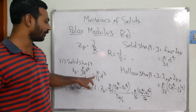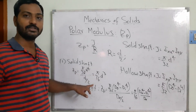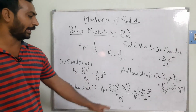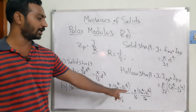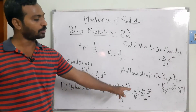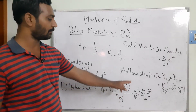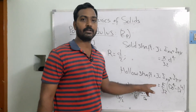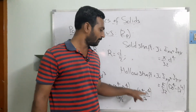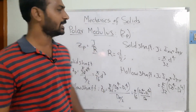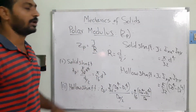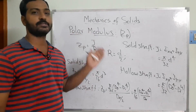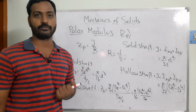After substituting the polar moment of inertia and the radius into the equation, the final result for the solid shaft is π/16 × D³. For the hollow shaft, the polar modulus is π/16 × (D⁴ − Di⁴) / D, where D is the outer diameter and Di is the inner diameter.